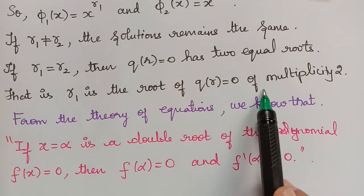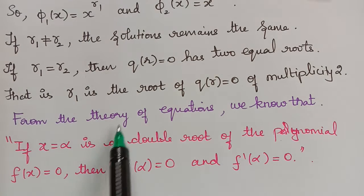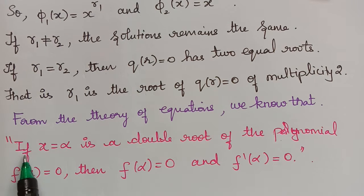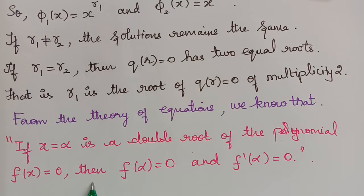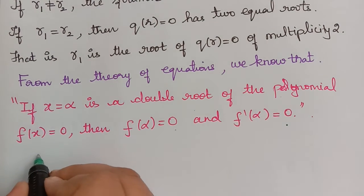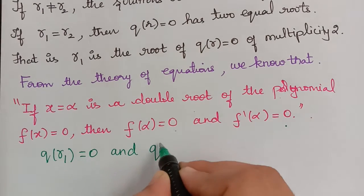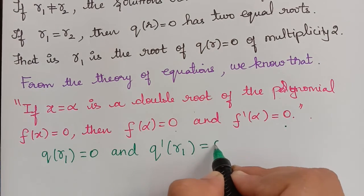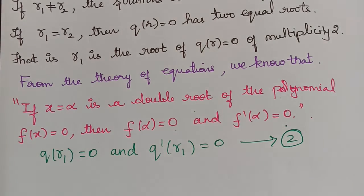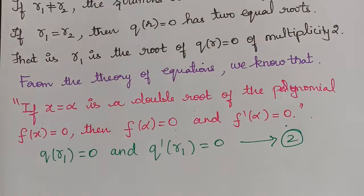When Q of r equals 0 has a root of multiplicity 2, from the theory of equations, if x equals alpha is a double root of f of x equals 0, then f of alpha equals 0 and f dash of alpha also equals 0. Using this, Q of r1 equals 0 and Q dash of r1 also equals 0. We mark this as equation 2. Previously we found L of x to the power r equals Q of r times x to the power r, which we mark as equation 1.